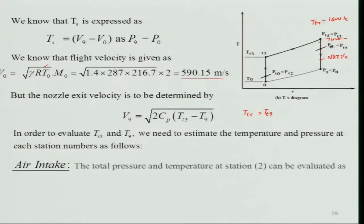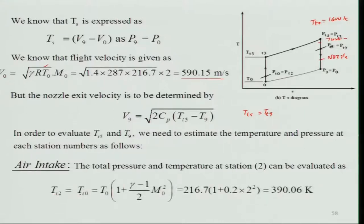Air intake: the total temperature at station 2, Tt2, can be evaluated easily. Since the air intake is adiabatic, Tt2 = Tt0 = T₀(1 + (γ−1)/2 · M₀²). With M₀ = 2 and γ = 1.4, we get Tt2 = 390.06 K. The temperature has increased from 216.7 K to 390 K due to the high Mach number. At low Mach numbers such as 0.2 or 0.3, the static and total temperatures would be nearly equal.